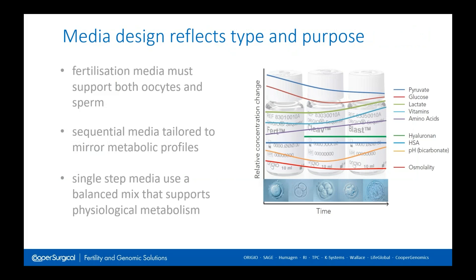Whichever system is used, the design reflects — or should reflect — its intended purpose. This is perhaps easiest with sequential systems, as each medium in the suite supports the specific needs of the gametes or embryos at that stage of the IVF process, whether it's fertilization, cleavage stages, or development to the blastocyst. In the single step model, we must devise a medium that allows physiological processes without stress, enabling the embryo to use the appropriate metabolic pathway at any given time — so it's a balance.